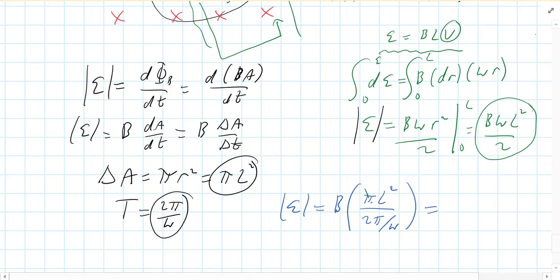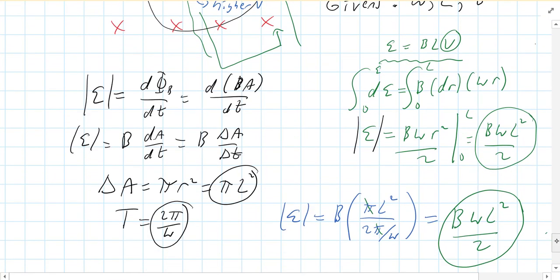And then you can do a little simplification here. The pi's drop out. The omega goes to the numerator. And you get the same equation we just got a moment ago. And obviously, you should get the same answer.